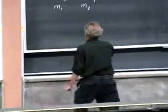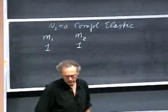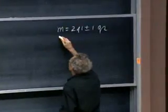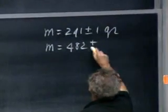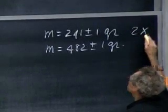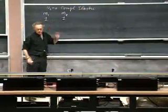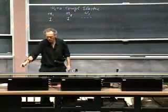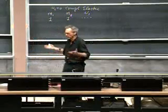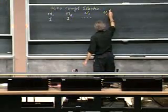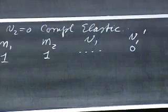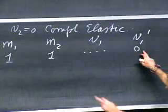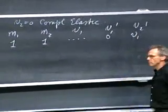I have one mass of 241 ± 1 grams and another of 482 ± 1 grams, and I have two of the lighter ones. In my first experiment, I use two 241-gram masses — ratio one to one. I give it some velocity, and the prediction is that V1 prime will be zero and V2 prime = V1. So T1 prime should be zero — the object stands still — and T2 prime should equal T1.